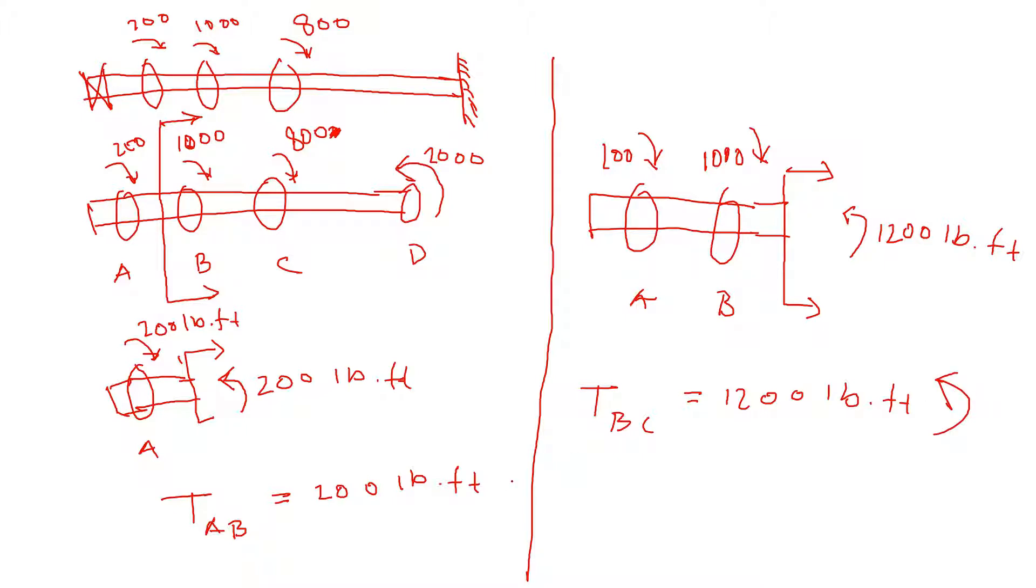Internal torque to resist it because the external is 1,200. To balance that, we have to apply the opposite way. Same thing here. We should have the direction similar.